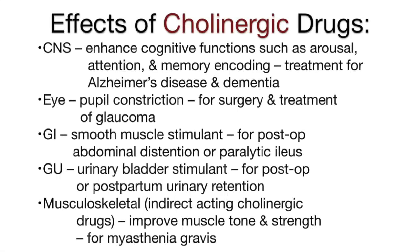Now we'll look at the effects of cholinergic drugs on different systems of the body. On the central nervous system, it causes enhanced cognitive function such as arousal, attention, and memory encoding, and is used for treatment of Alzheimer's disease and dementia. On the eye, cholinergic drugs cause pupil constriction and are used for surgery and treatment of glaucoma.